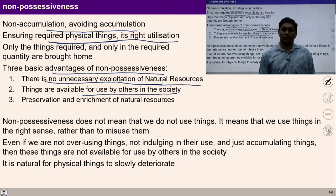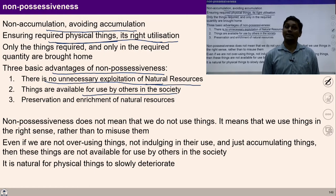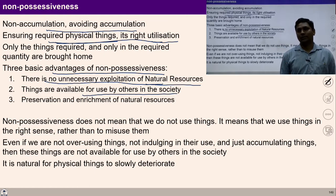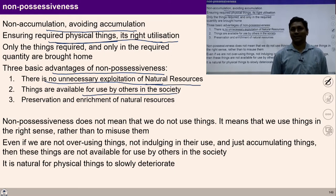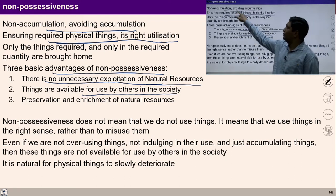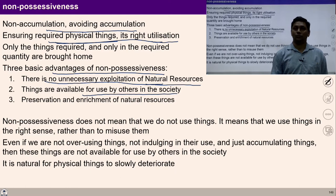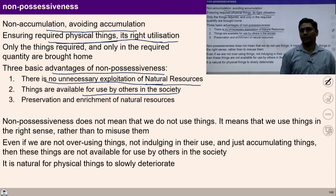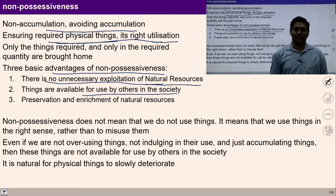To live with non-accumulation means we need to produce physical facilities righteously. The first step to ensure non-accumulation is to identify the requirements and produce them systematically. If I want to live with non-accumulation, the first important point is to recognize and identify my real needs and have knowledge of production while ensuring mutual enrichment with the rest of nature.